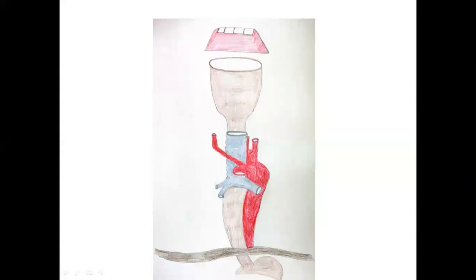Hello everyone, today we are going to see the constrictions of the esophagus, which is one of the important points of the anatomy of the esophagus. First we will see the structures — what are the major structures?